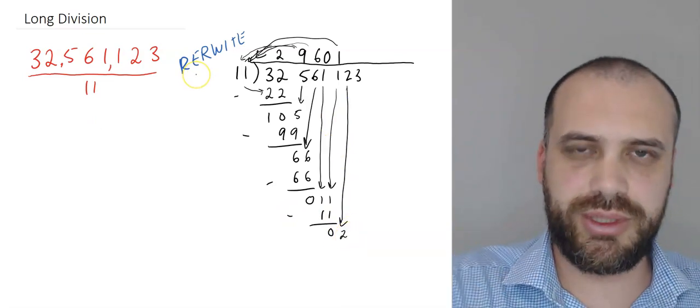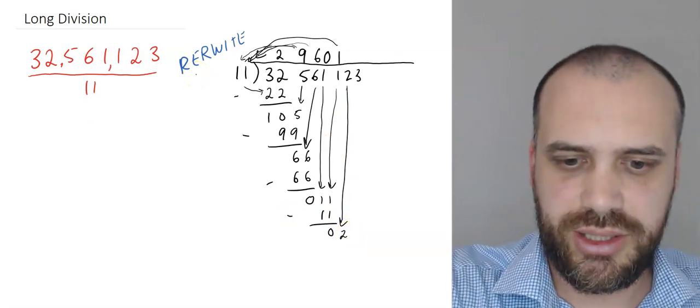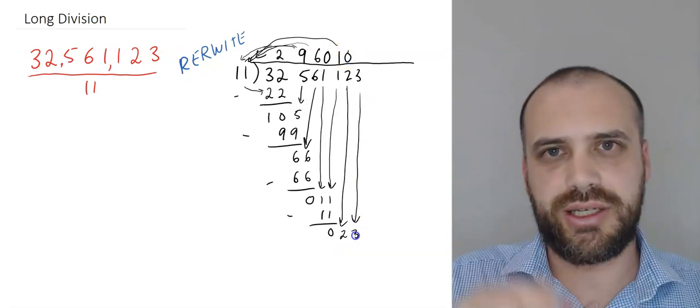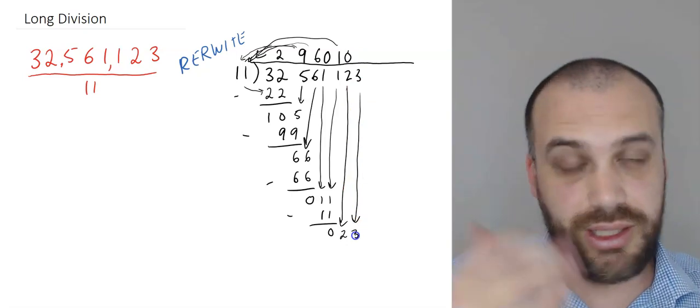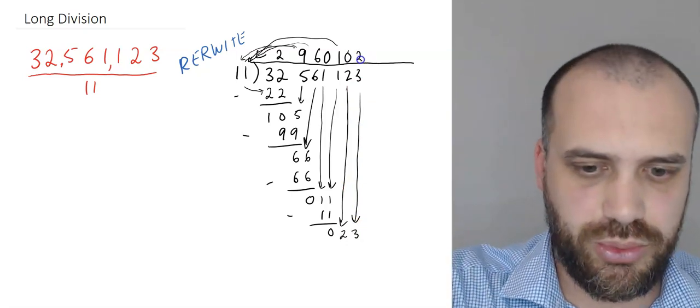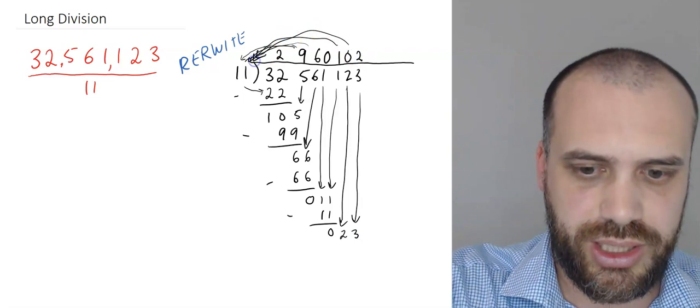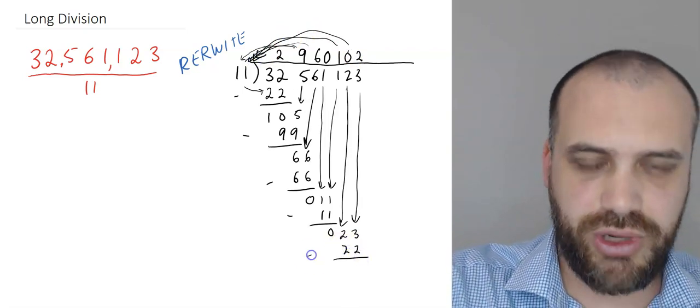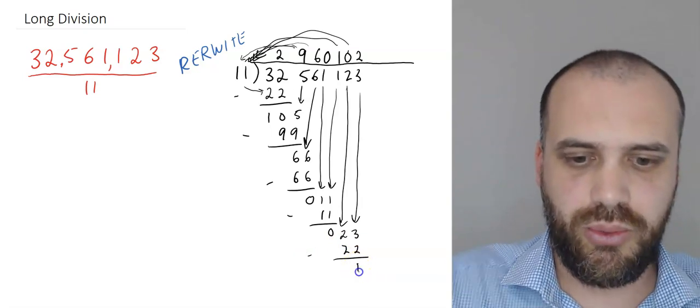Does 11 go into 2? No, it doesn't. So we get a 0 here. Bring the next thing down. 23. Does 11 go into 23? Yes, it does. It goes in twice. Multiply here. 2 times 11 is 22. Subtract one from the other. 1.